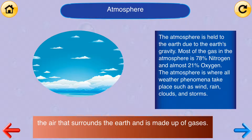The atmosphere is held to the Earth due to the Earth's gravity. Most of the gas in the atmosphere is 78% nitrogen and almost 21% oxygen. The atmosphere is where all weather phenomena take place, such as wind, rain, clouds, and storms.